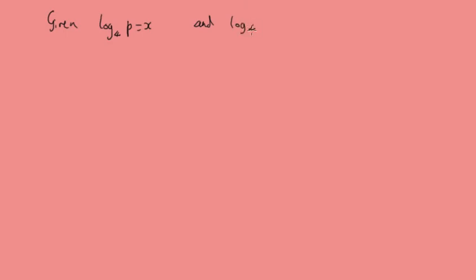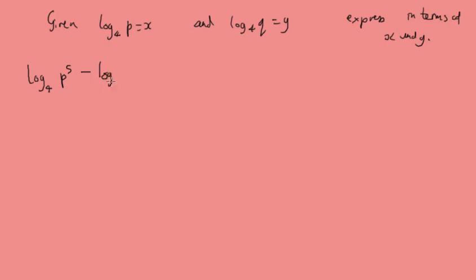Now let's do something a bit more tricky. We're given that log base 4 of p equals x, and log base 4 of q equals y, and we want to express the following in terms of x and y. Firstly, log base 4 of p to the power 5 minus log base 4 of q squared: using the power law, taking the 5 and the 2 out, and substituting x and y, we get 5x minus 2y.